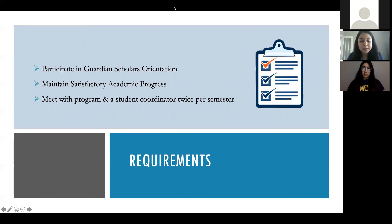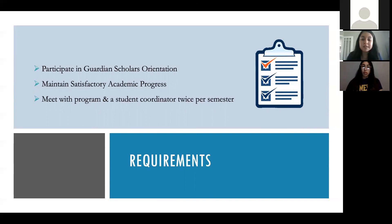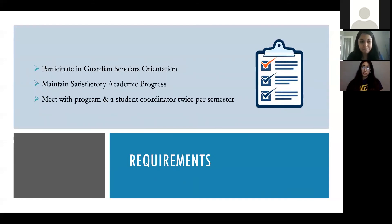Now that we've talked about eligibility and documentation, I also want to briefly go over the requirements and expectations we have of scholars in the program. All Guardian Scholars must participate in the Guardian Scholars orientation. If scholars can't attend in person, they will be required to meet with me an additional time to cover all program benefits and services, and will also be required to meet with the student coordinator an additional time. Scholars are also expected to maintain satisfactory academic progress and must meet with the program coordinator and a student coordinator twice per semester.